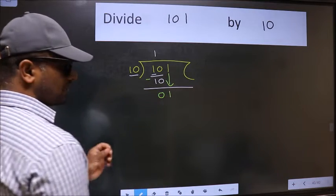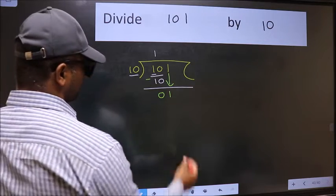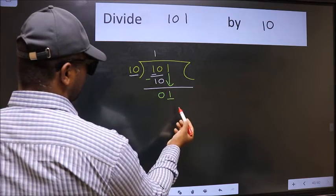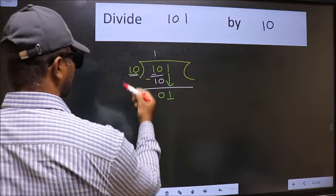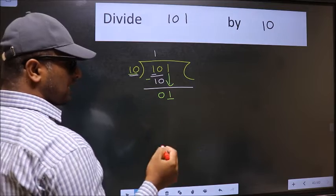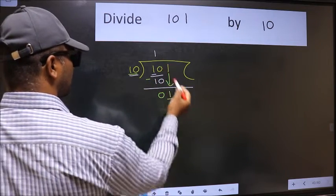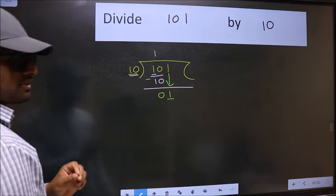After this step, the mistake happens. And the mistake is this: here we have 1 and here 10. 1 is smaller than 10. So what many do is they directly put dot, take 0, which is wrong.